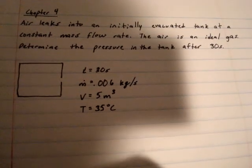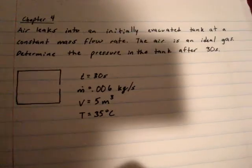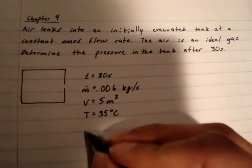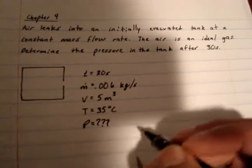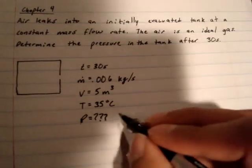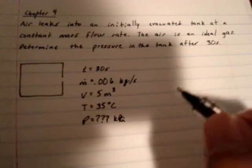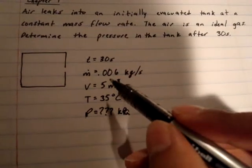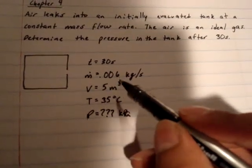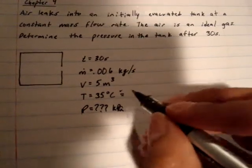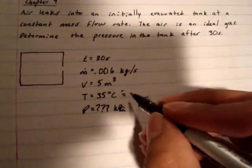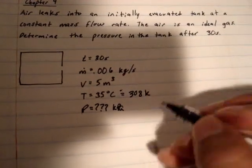Alright, well, we need to find our pressure, which is unknown. And we're given time, the mass rate, the volume, and the temperature, which equals 308 Kelvin.